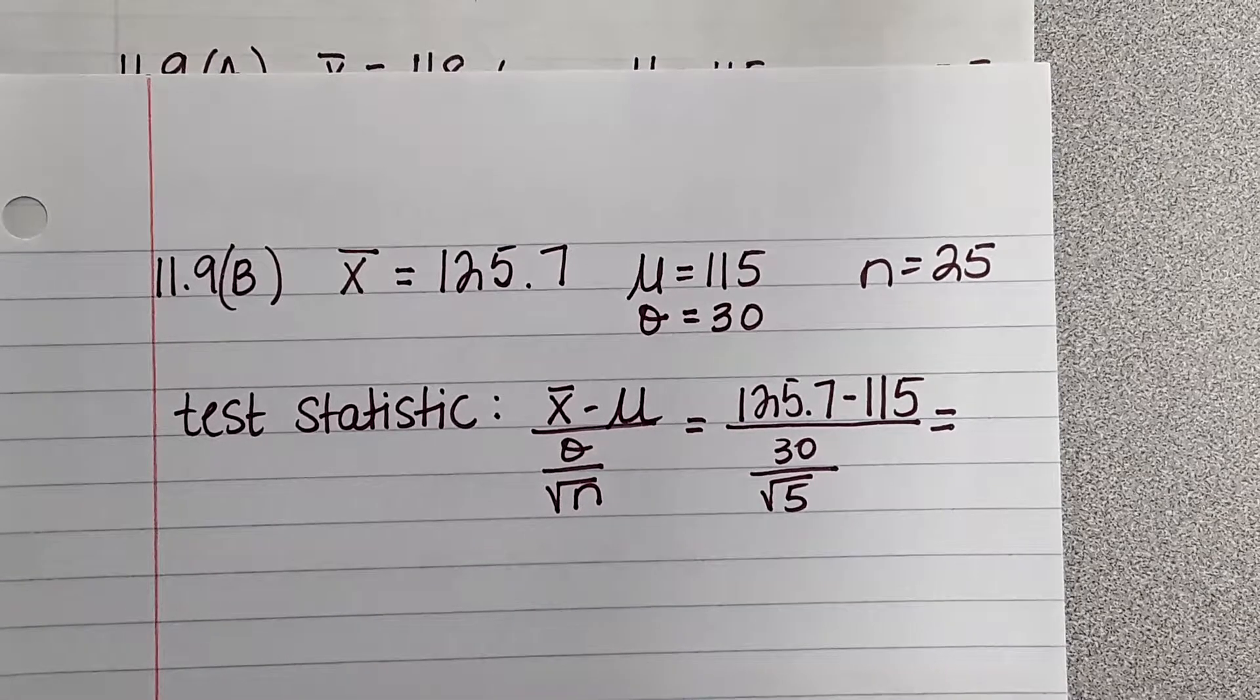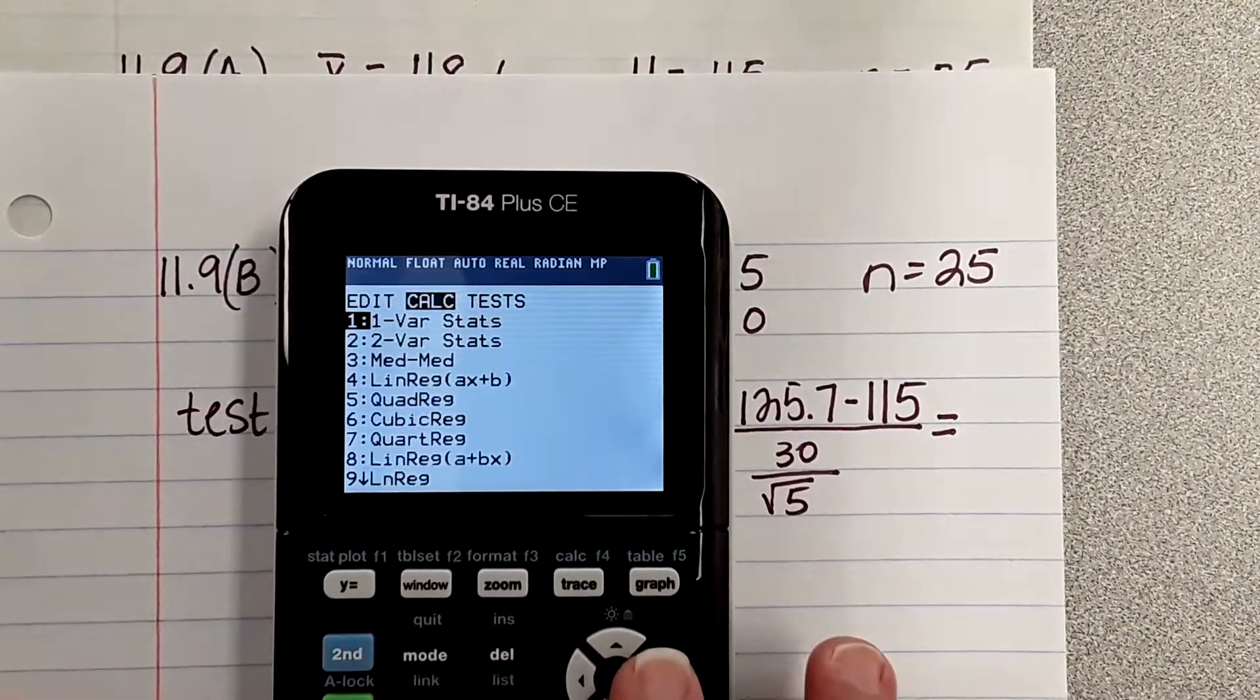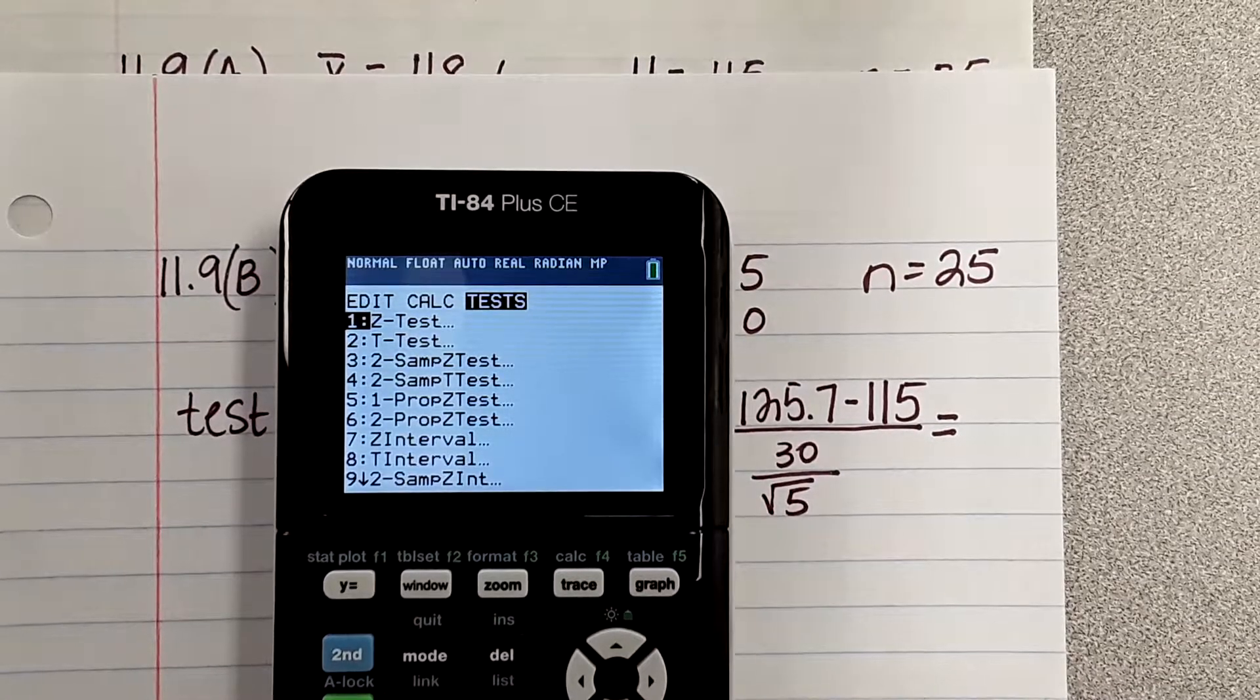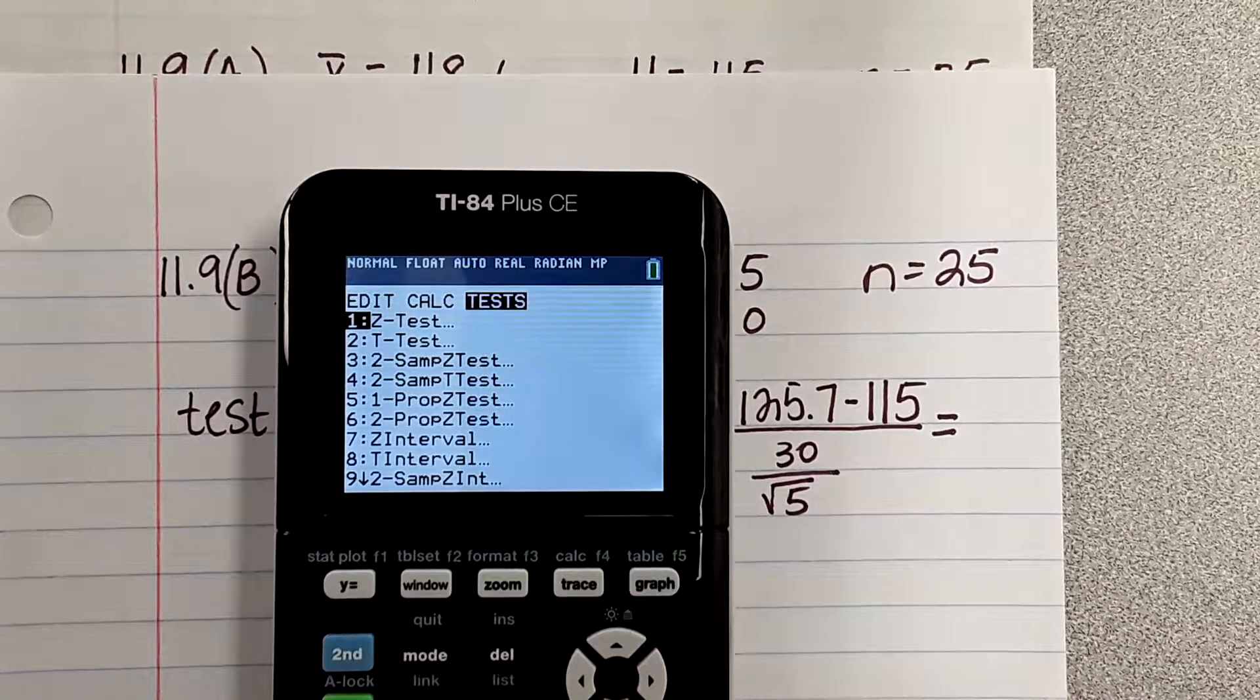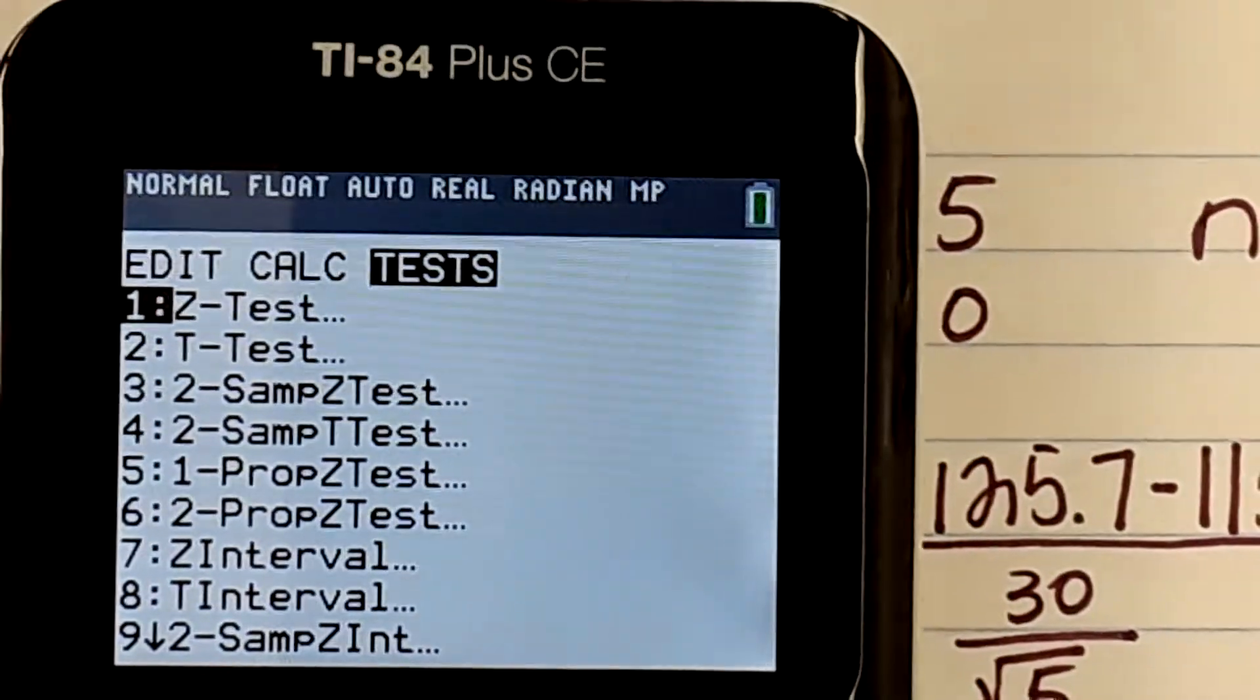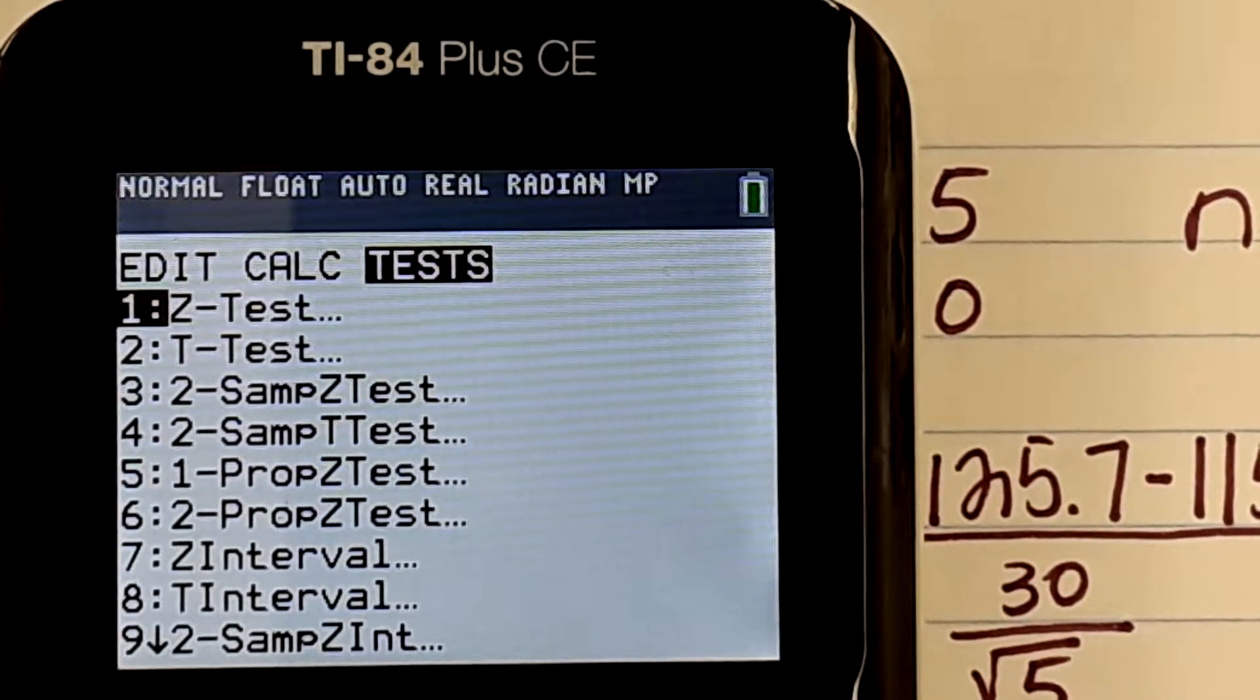Well, it won't tell you that. You'll have to come up with it, but in your calculator you will see it. So we're going to hit stat, and we're going to go over to test. Last unit, we use confidence intervals. This unit, we're going to use test. How do I know if it's going to be a z-test or a t-test? I know it's going to be sigma, so that's going to be a z-test.